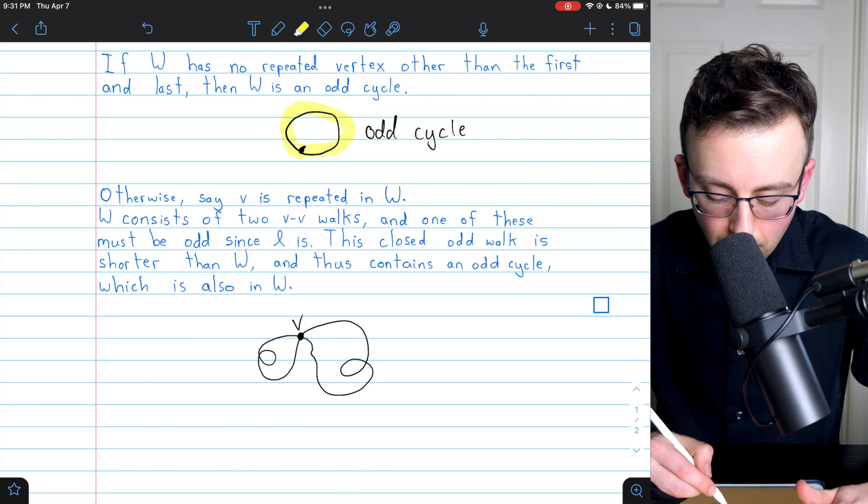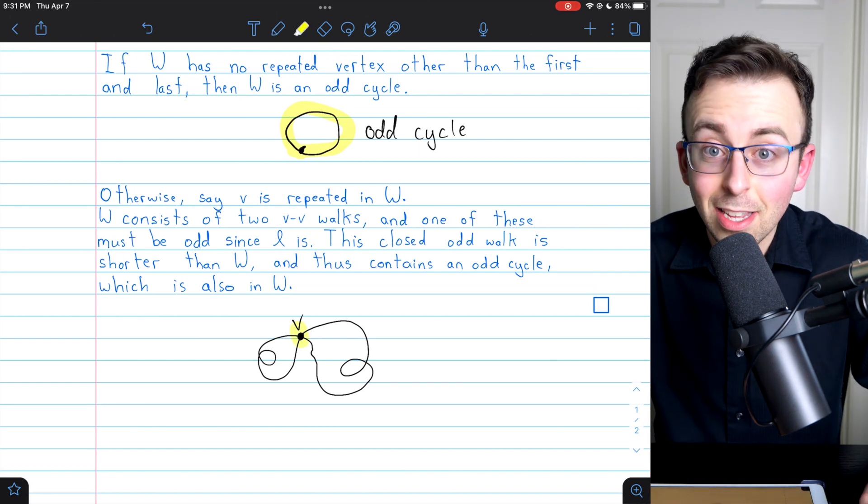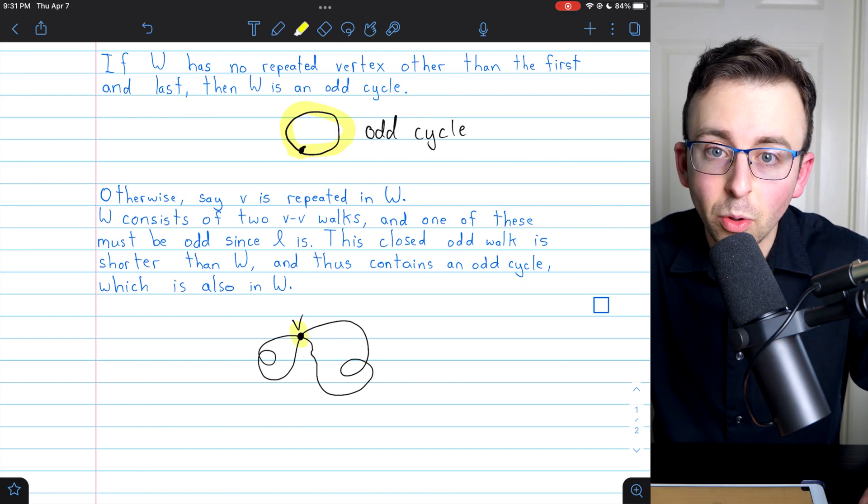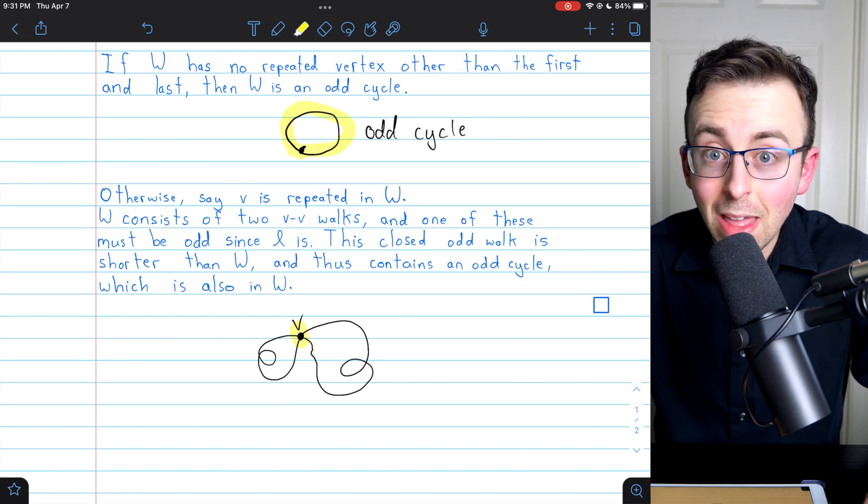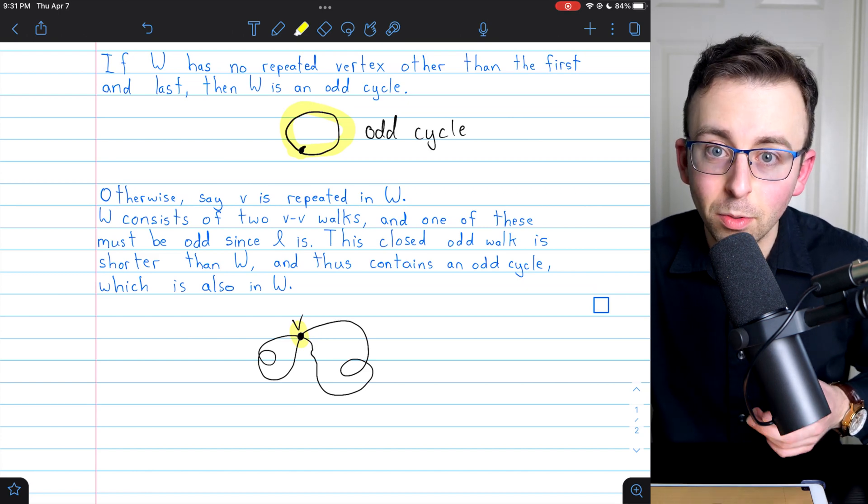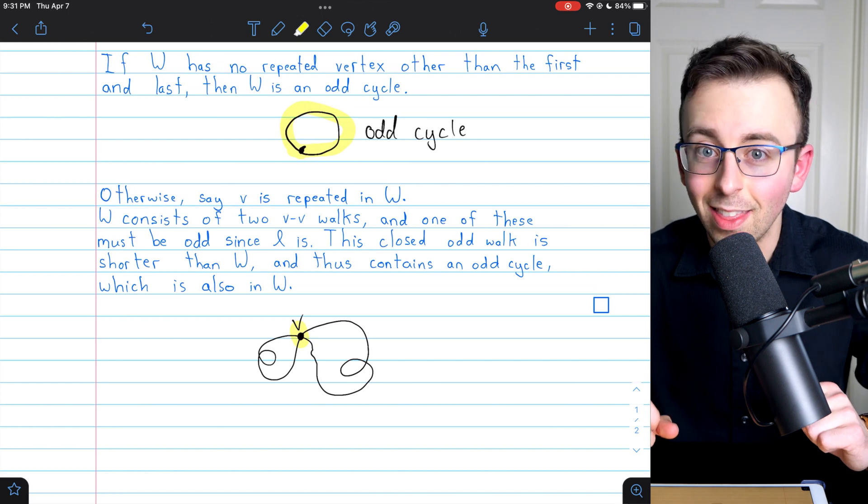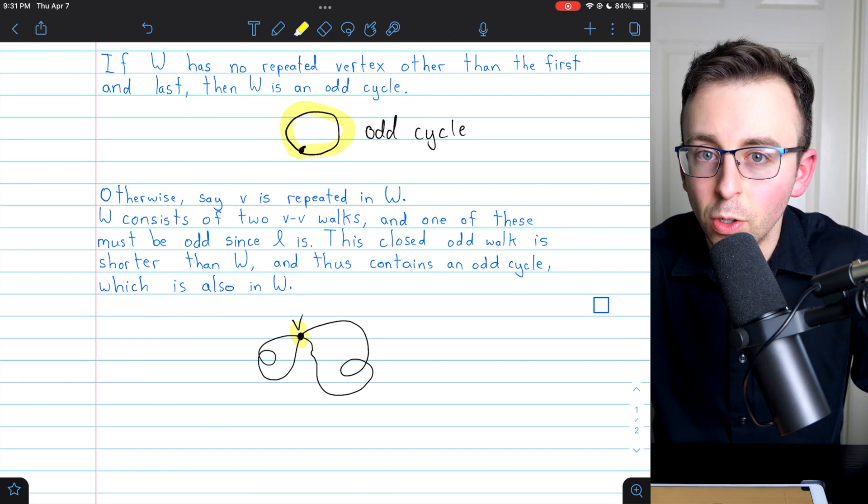Now, there's nothing restricting V from, in fact, being the starting and ending vertex of the walk. The walk could repeat that vertex additional times, aside from just the start and the end. This addresses that possibility, too.